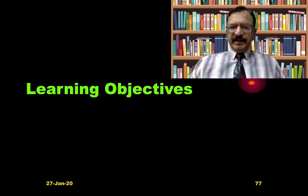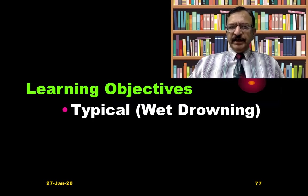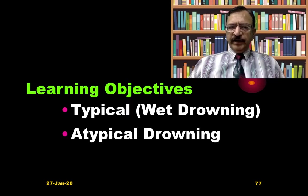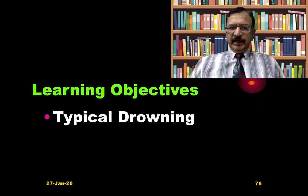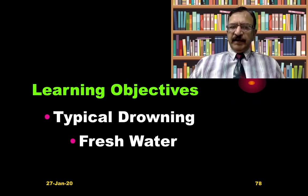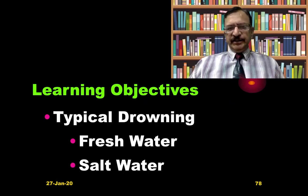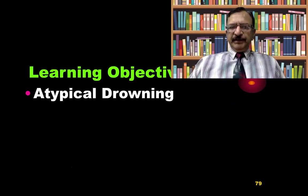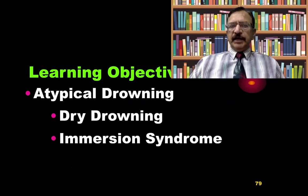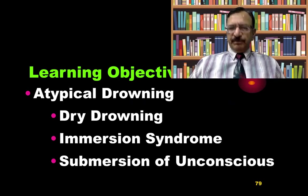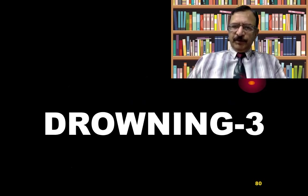The learning objective of this lecture will be a discussion about types of drowning. The typical type is wet drowning, and the atypical types are variants from the typical. Typical drowning can occur in fresh water or salt water. Atypical types include dry drowning, immersion syndrome, submersion of unconscious, and near drowning.